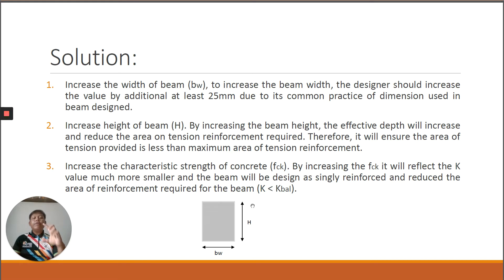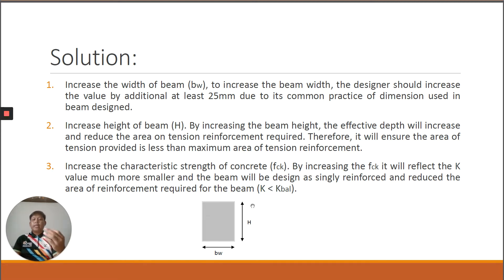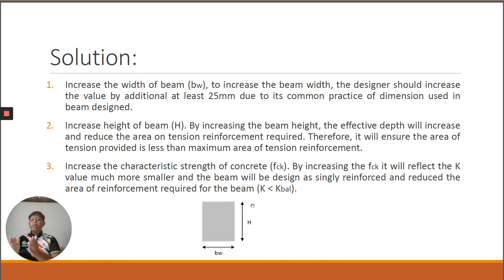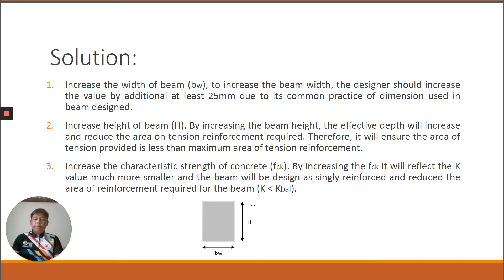To calculate the effective depth, it relates to the beam height H as: D = H − C_nominal − diameter of link − (diameter of bar / 2). By increasing the beam height, we increase the effective depth D. Then M / (0.87 × Fyk × Z) will produce a smaller area of reinforcement required, and we provide a smaller area of tension reinforcement.